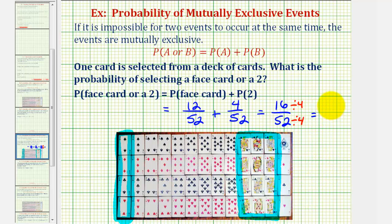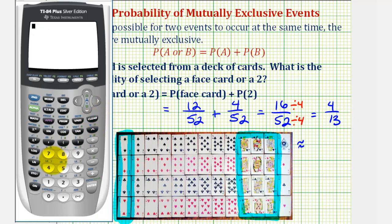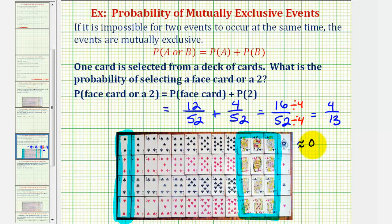So this would be four thirteenths. Let's also express this as a decimal and a percentage. So four divided by thirteen will give us our decimal. So it's approximately zero point three zero seven seven. If we multiply this by one hundred and add a percent symbol, we would have thirty point seven seven percent.